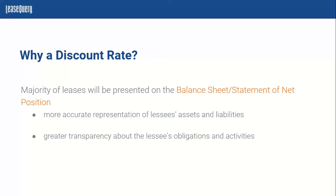Essentially, when you transition to ASC 842, IFRS 16, or GASB 87, all of your leases are now going to be presented on the balance sheet — or the majority of your leases. When we say majority, we may be excluding some scoped-out items like short-term leases or immaterial low-value assets. So the majority of your leases will be presented on the balance sheet or the statement of net position.